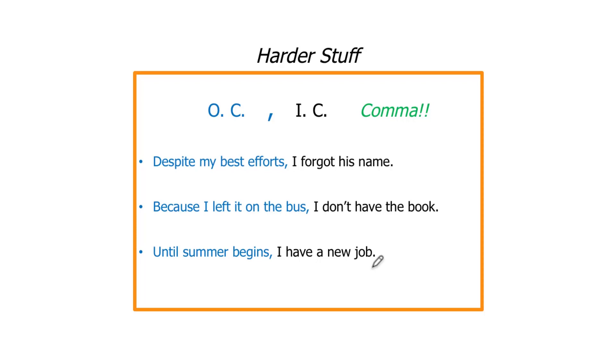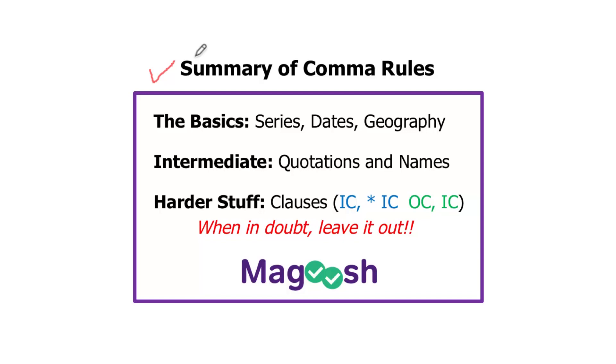And that is a wrap. Thank you so much for staying with me. I just want to recap really quick. We covered some information on series, dates, geography. Remember, the geography only needs two terms. Quotations, names when you address people. And then we looked at two different constructions of sentences that have commas. Independent clause, comma, independent clause. And comma here, if we have an other clause, followed by an independent clause. But the most important thing is when in doubt, leave it out. So if something does not fit the rules of when it's supposed to have a comma, just assume it doesn't have a comma. I really hope you enjoyed these tips. I hope you learned a couple of new things. If you did find it helpful, go ahead and hit the like button. You can subscribe to this channel, get more tips. We have more videos coming out all the time. Good luck with your studying, and I wish you all the best on test day.